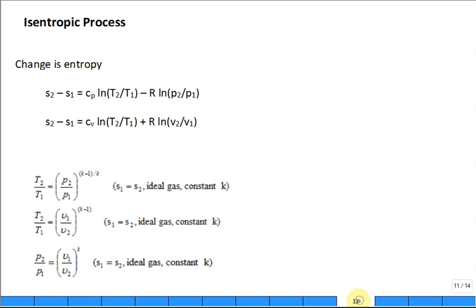That special process is called isentropic. What does isentropic mean? Constant S — constant entropy. If you have S2 equal to S1, that means the change in entropy is zero for an isentropic process.